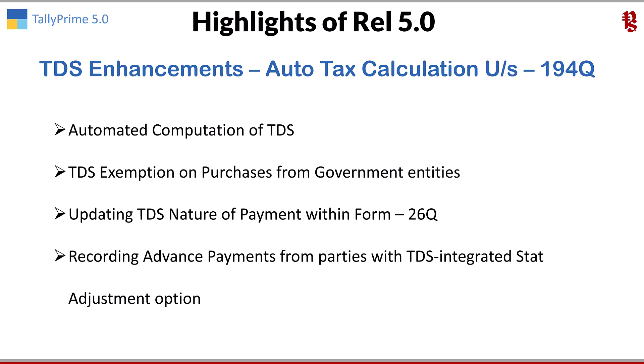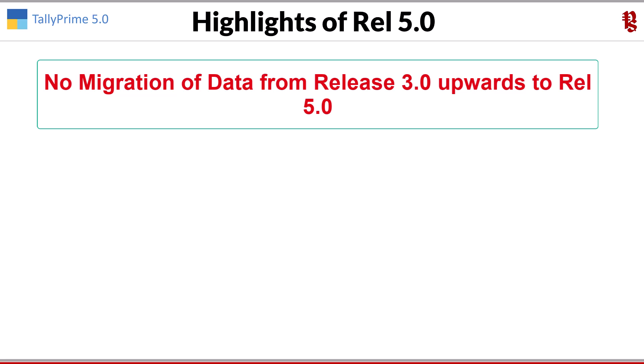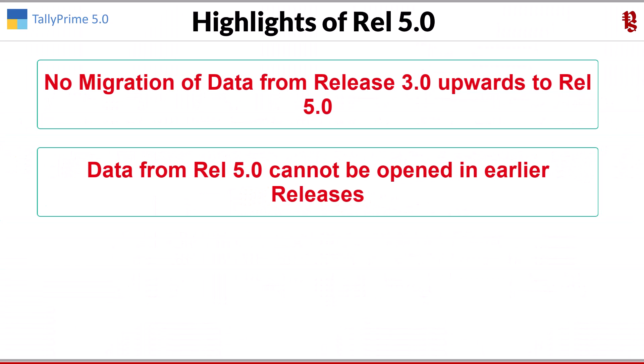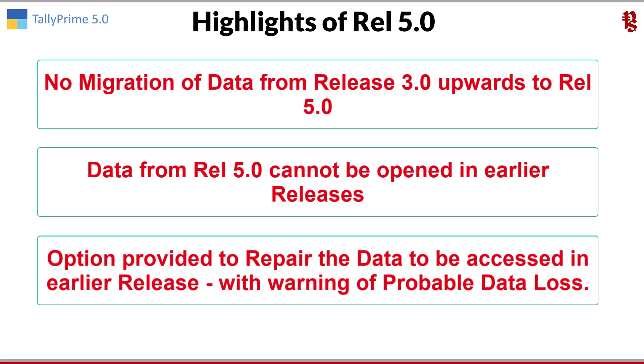Apart from these, certain product improvements have been provided. A significant one is that moving your company from Tally Prime Release 3.0 to Release 5.0 does not require any migration. All you need to do is take a backup and load the data in Release 5.0. Importantly, once you access data in Release 5.0, it cannot be opened in an earlier release. However, if you need to revert and had not taken a backup, you will be prompted to upgrade. A repair option is also available, though Tally warns there may be some data loss, after which the data can be opened in earlier releases.